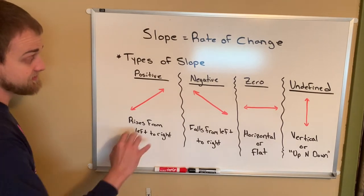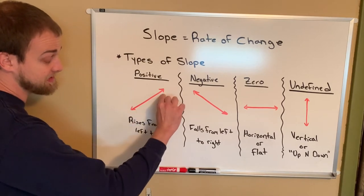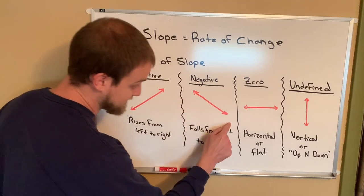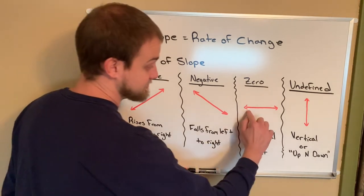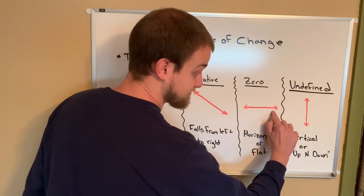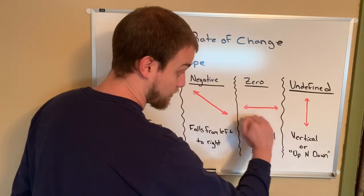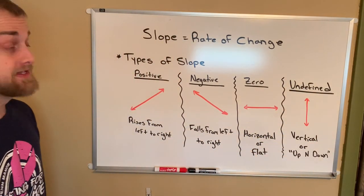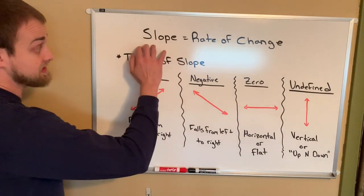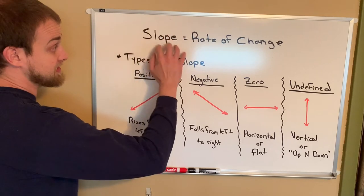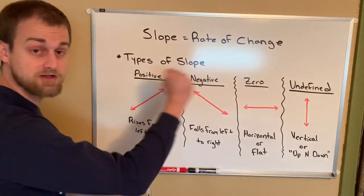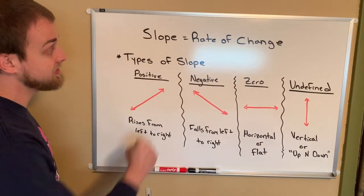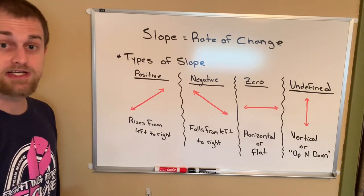So just to review: positive slope increases from left to right. Negative slope decreases from left to right. Zero slope is flat or horizontal. Undefined slope is vertical, or up and down. We also need to remember that slope and rate of change are synonymous — they mean the same thing and those words can be used interchangeably. We're going to expand on this idea in the days to come.